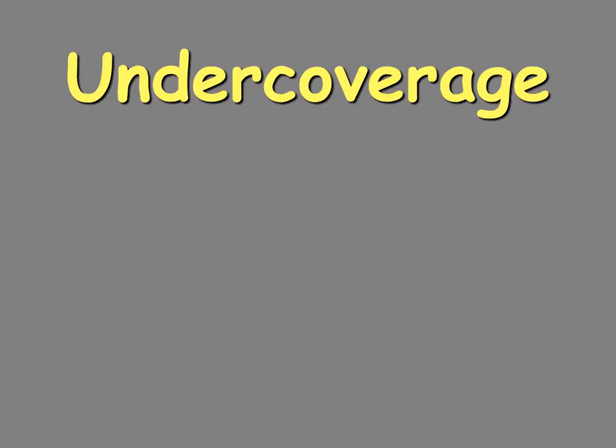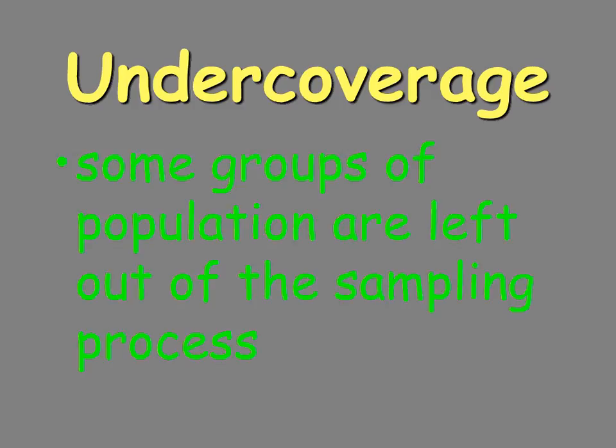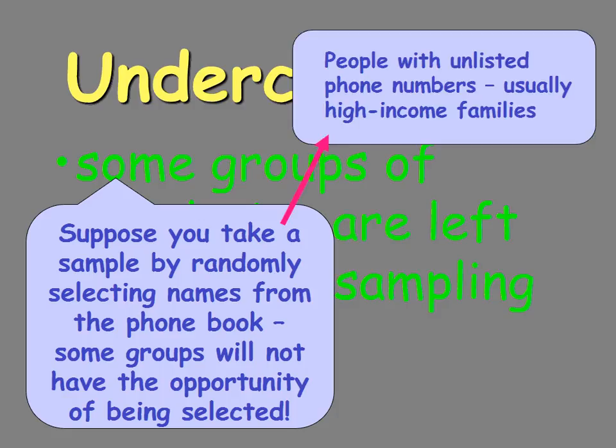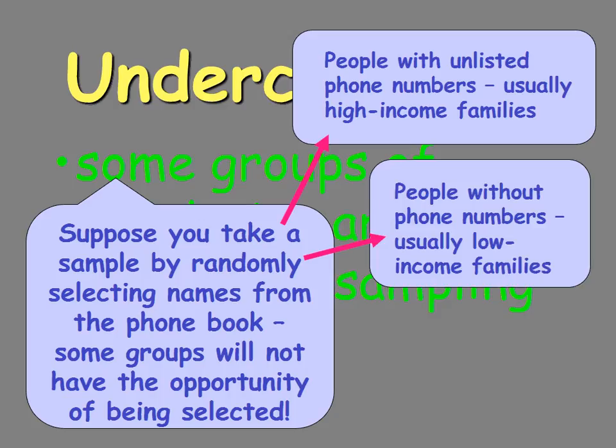Under coverage occurs when we look at who is not being represented in the sampling process. If it's a phone-in poll, people that don't have telephones are under-covered. If it is a newspaper or TV poll, people that don't read the newspaper or don't watch the TV show are being under-covered in that sample. Examples for phone-in polls include unlisted numbers and people without phones — you're losing some of those groups.